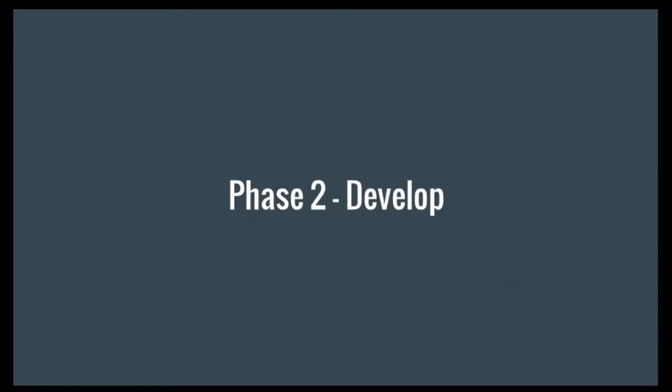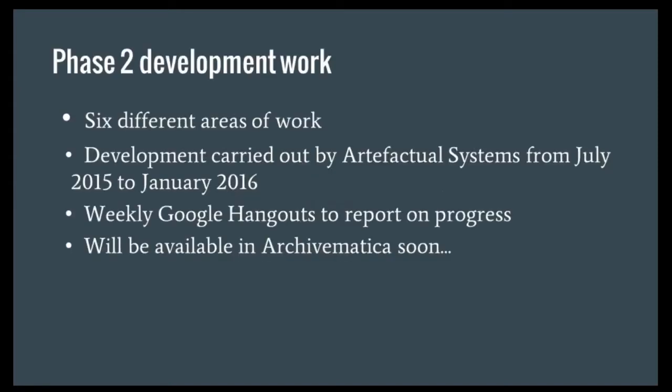In phase one we decided that Archivematica was worth exploring further for use with research data. One of the things we did in phase one was look at Archivematica against our own digital preservation requirements and found it fell short in several areas — it had potential, but there were certainly areas where it could improve. What we wanted to do in phase two was to try and make it better. We wanted to work with Artifactual Systems to make Archivematica more suitable for managing and preserving research data. We worked in six different areas between July last year and January this year.